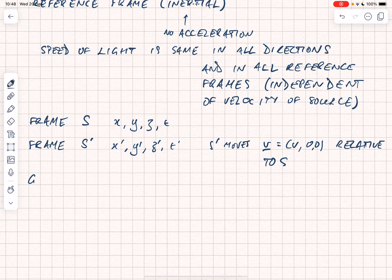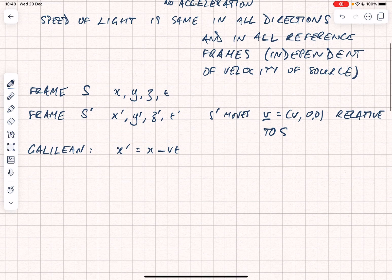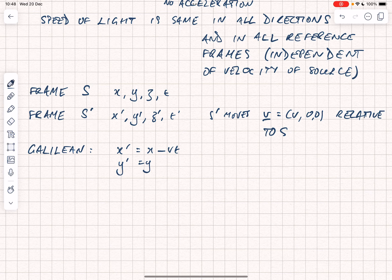A simple Galilean transform, the kind of thing that you would derive by doing simple mechanics experiments, would tell you that X' is equal to X minus VT. Y' is equal to Y, Z' is equal to Z, and T' is equal to T. Unfortunately, you discover fairly rapidly that that is inadequate when you're thinking about light and when you're thinking about electromagnetic radiation.